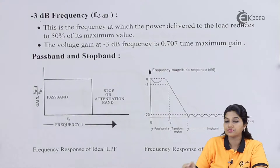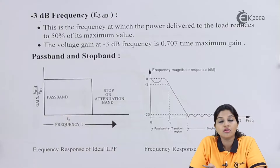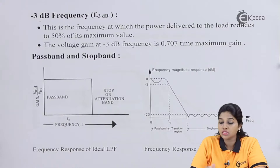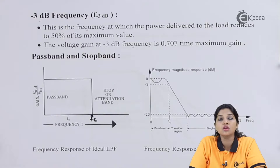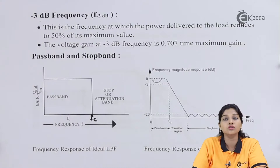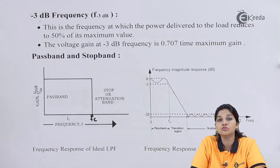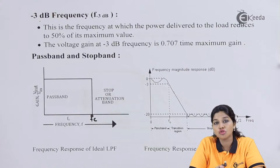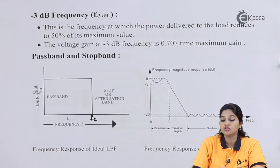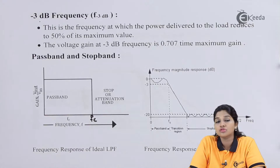The frequency response is a graph between frequency and gain. Pass band is the range of frequencies that can be passed by the filter — below the cutoff frequency FC, frequencies are passed to the output. Above FC, the filter stops or attenuates the band of frequencies, which is the stop band or attenuation band. In the ideal response we get a sharp boundary, but ideal response is not possible practically.